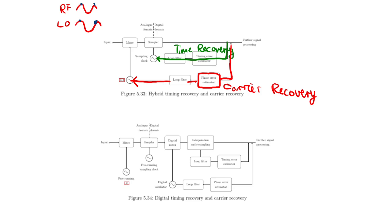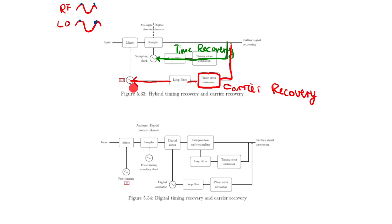The carrier recovery depicted here is a hybrid implementation. The phase error estimation is done in the digital domain, but the local oscillator is an analog component. Here is the boundary between the digital and analog components. The estimated phase error is passed through a loop filter, as known from control theory, and then an analog signal is generated to control the local oscillator. The local oscillator signal is then fed into the mixer, mixing the RF signal down to baseband. From the baseband signal, the current phase error is estimated again — and this is where the loop closes.